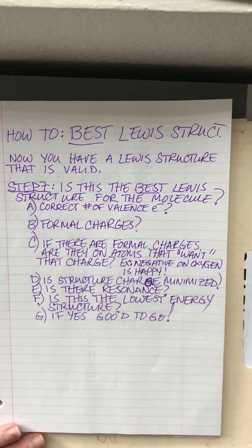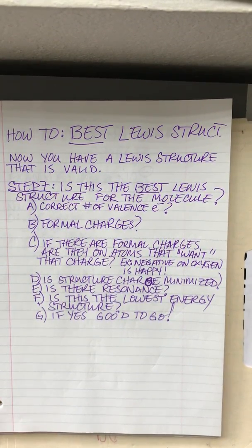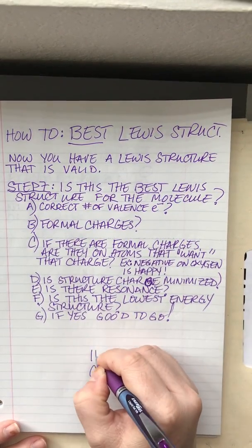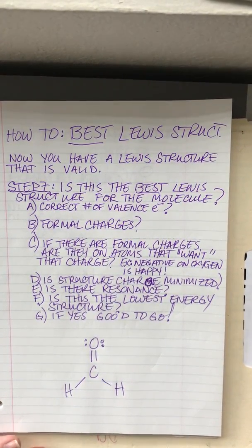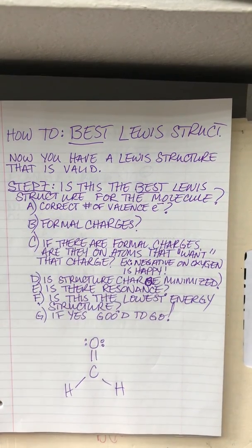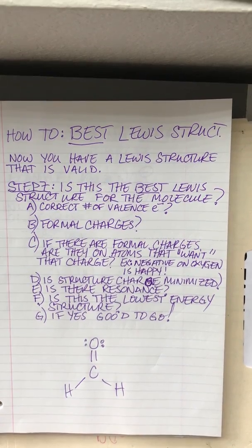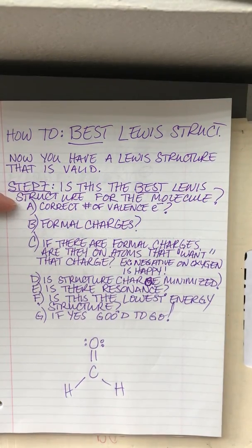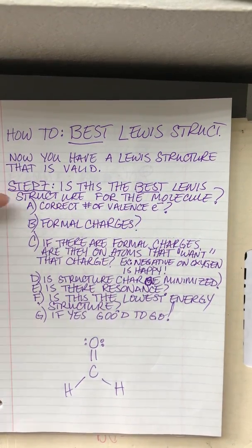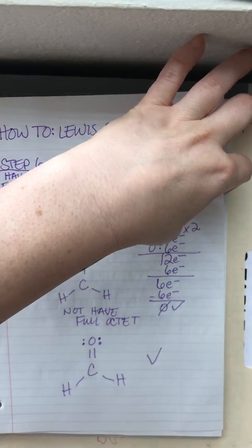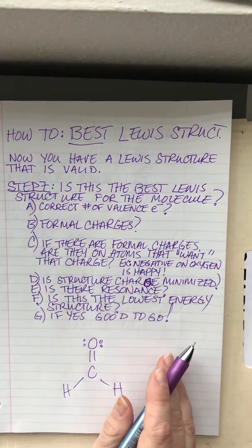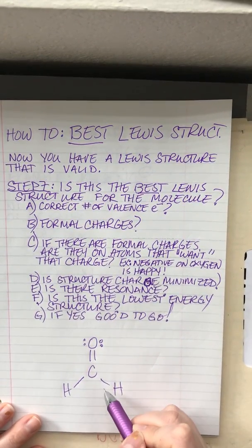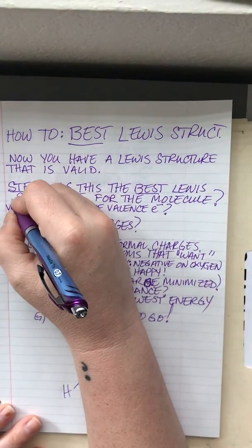When you're finished making a Lewis structure, you always want to make sure you have the very best Lewis structure. There are a couple of things to double-check. The first is: do we have the correct number of valence electrons? We said there should be twelve total electrons for this molecule. Counting them: two, four, six, eight, ten, twelve. Check — we have the correct count.